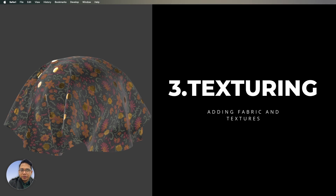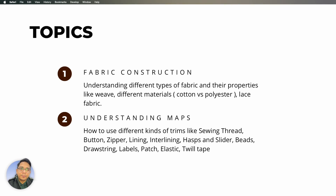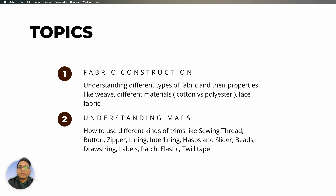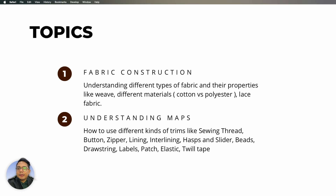The next stage is texturing. Texturing is about adding fabrics to your designs. There are two highly essential topics. First is fabric construction — understanding what the fabric is made of: cotton, polyester, and what kind of weave structure, such as dobby weave, jacquard weave, plain weave, twill weave, or satin weave. Then understanding different kinds of finishing: surface prints, garment dyeing, fabric dyeing, and yarn dyeing. You need to understand these basic things about fabrics.